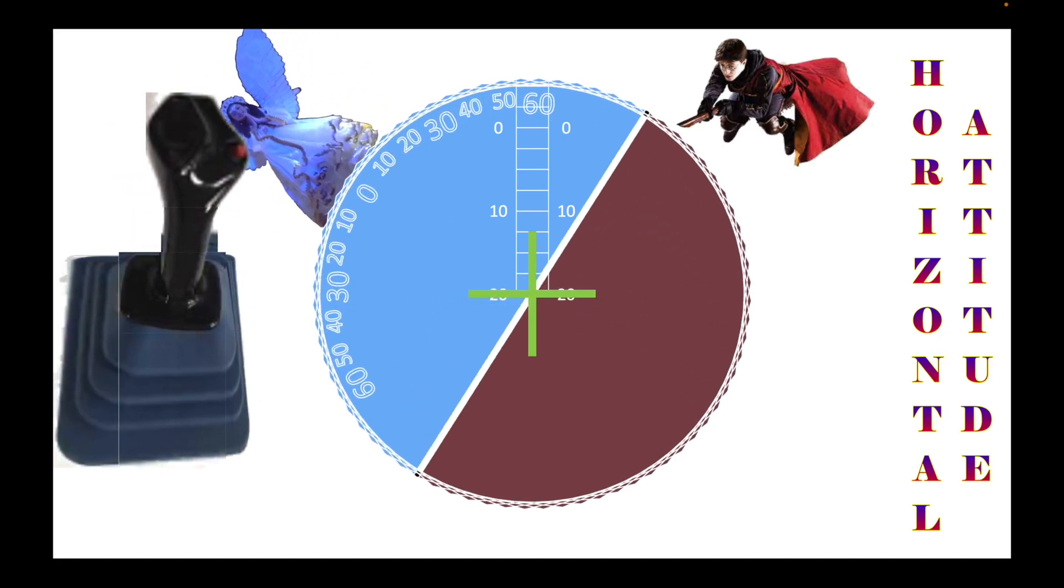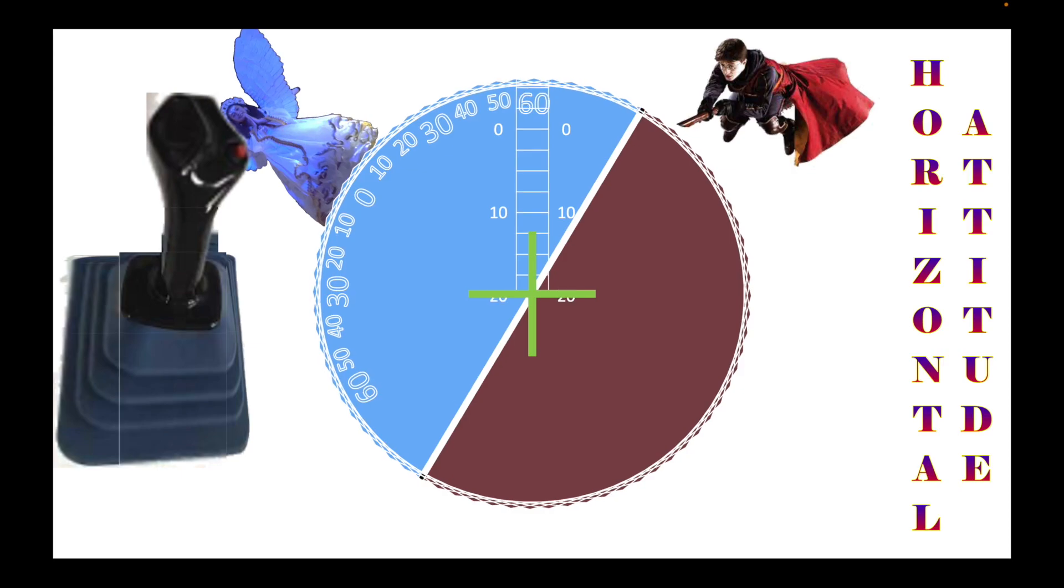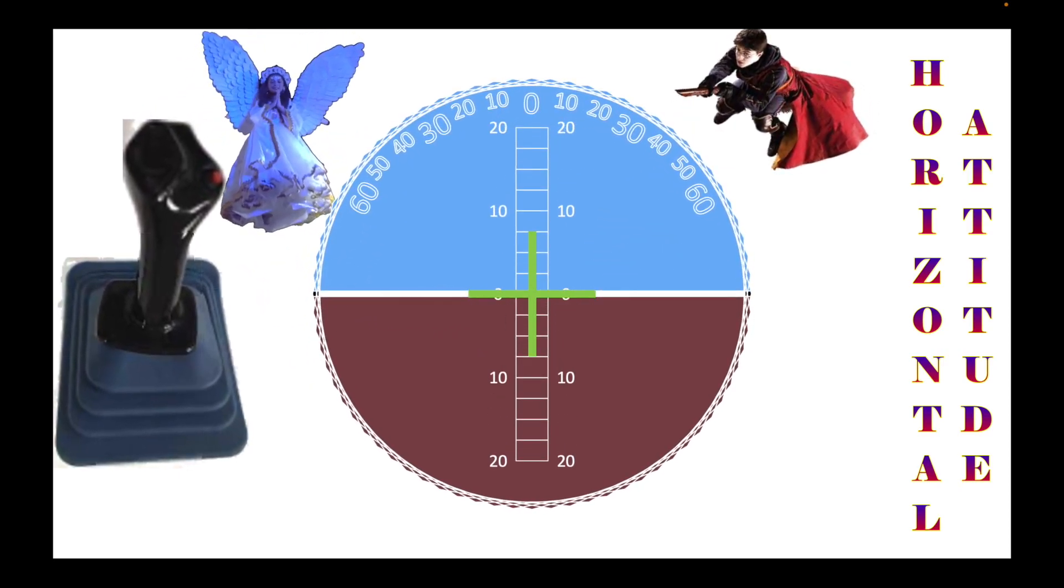And for the last example of the horizontal attitude indicator, we portray the airplane that is continuously descending, but it is now tilting clockwise to the right, where the right wing is lower than the left one. But when you're not changing directions, this is how it would look like.